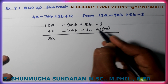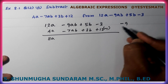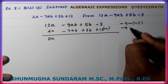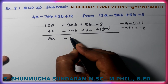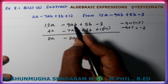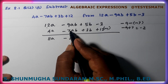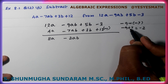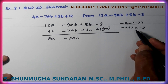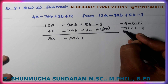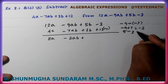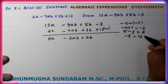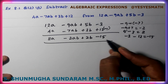Minus 1 common. Minus 9, separate minus 7. Minus into minus is plus. Minus 9 plus 7 is minus 2, so minus 2AB. Then 5B minus 3B is 2B. Minus 3 minus 12 is minus 15. So the answer is 8A minus 2AB plus 2B minus 15.